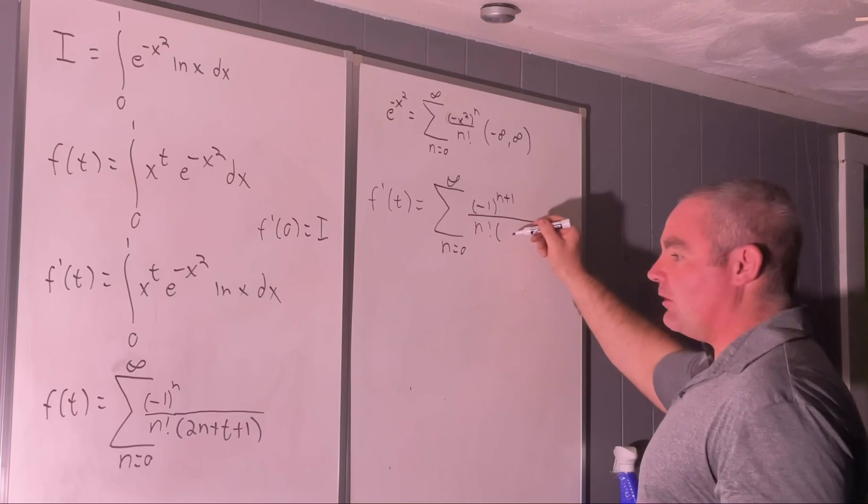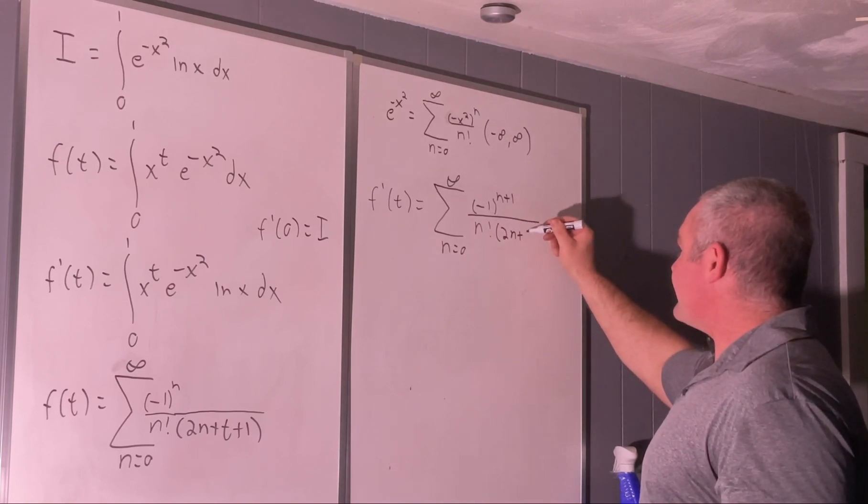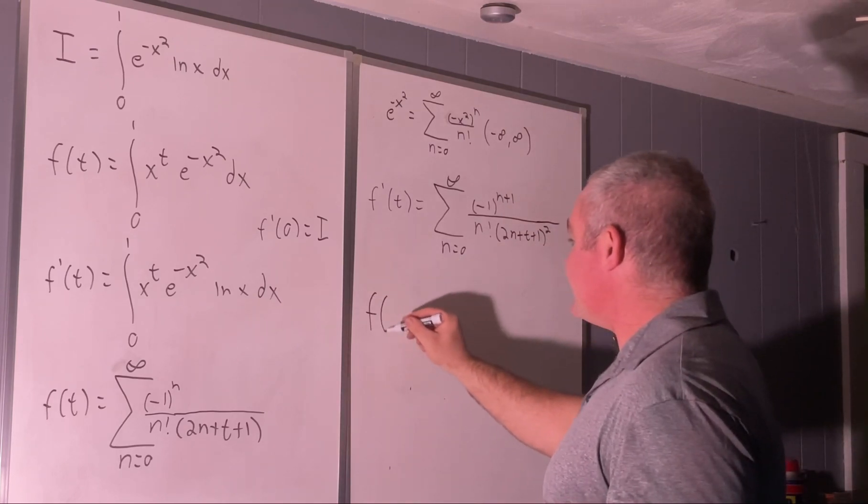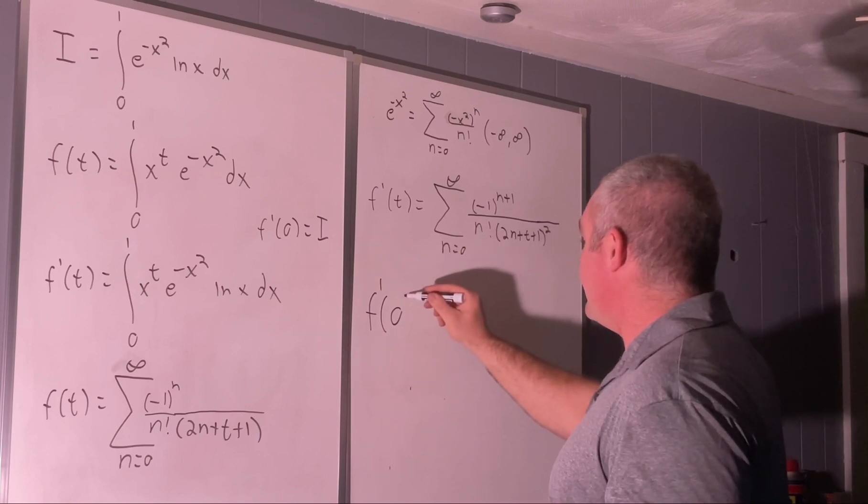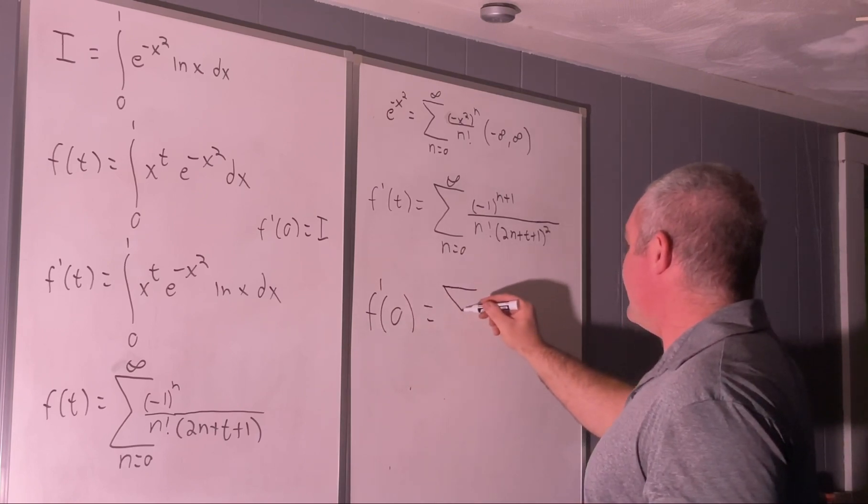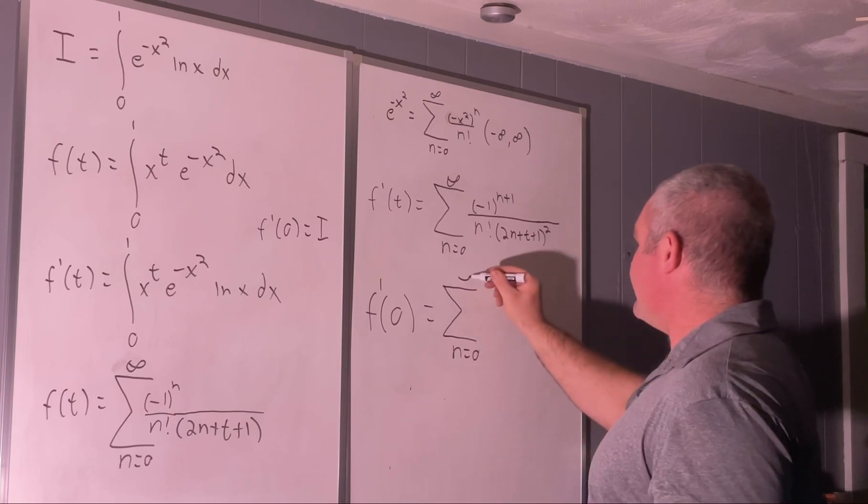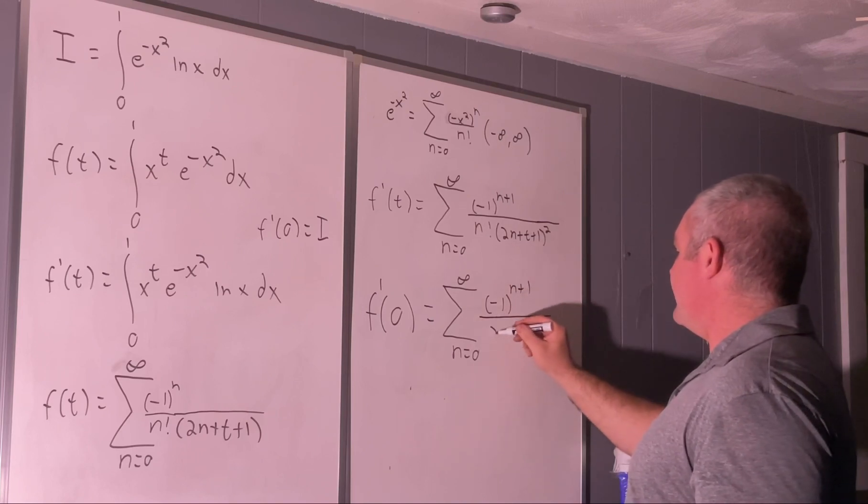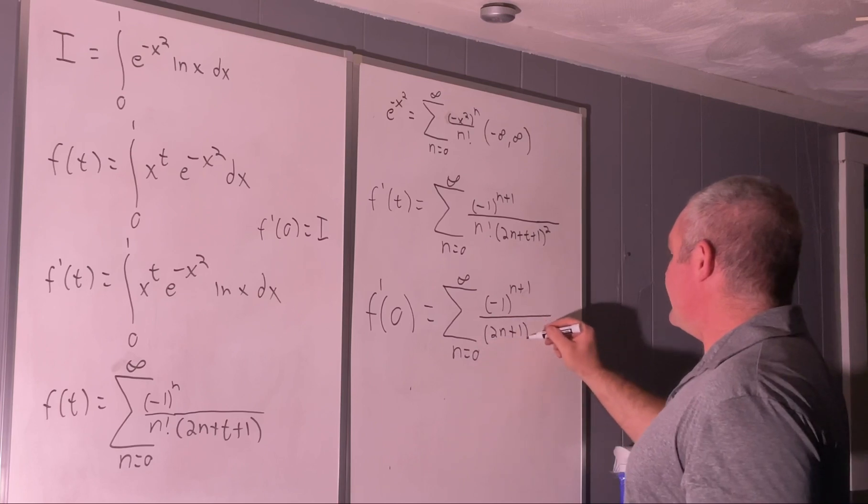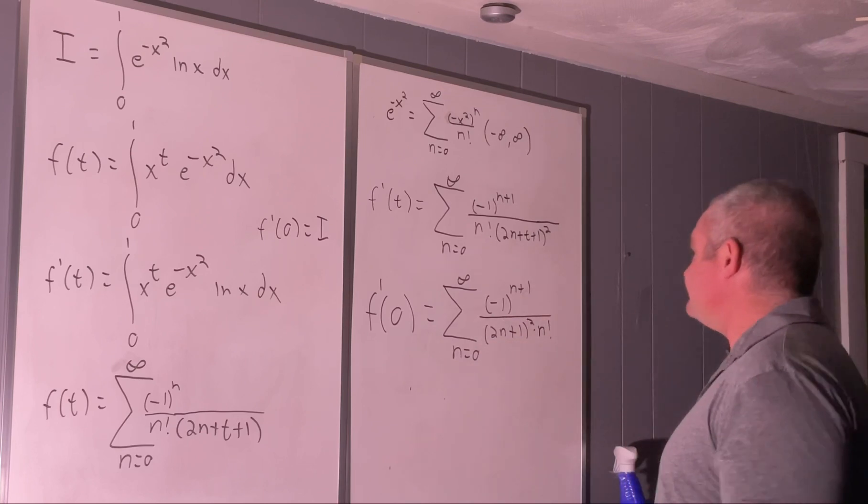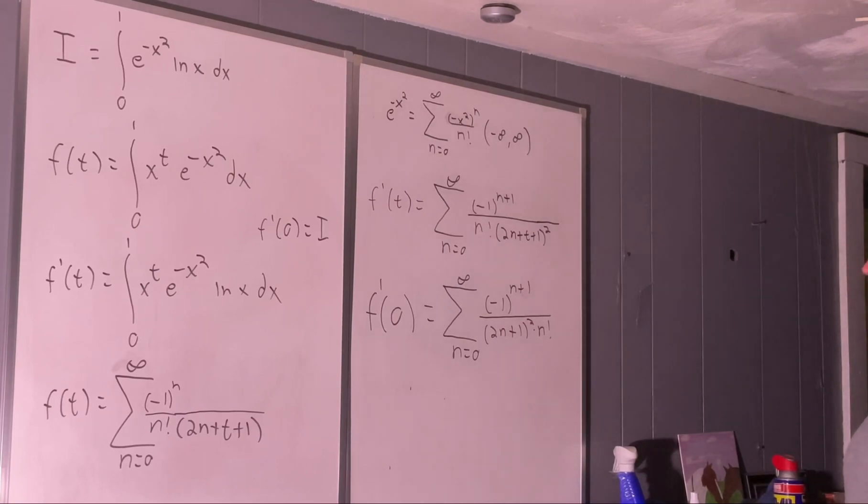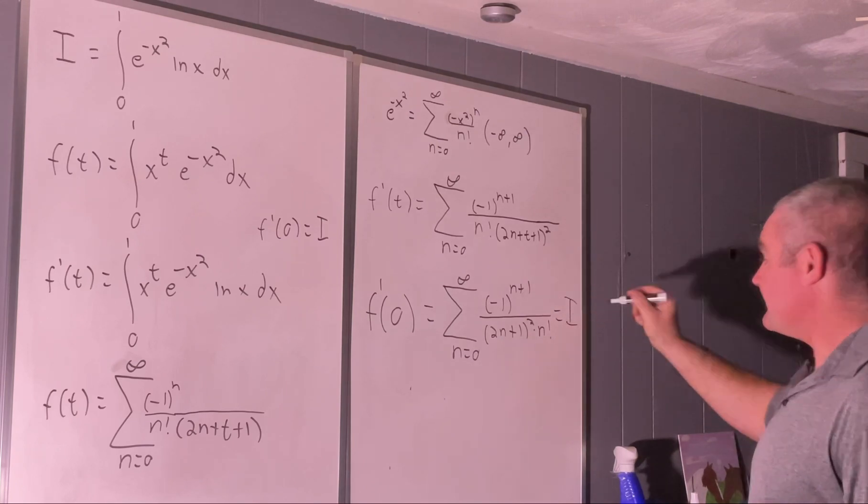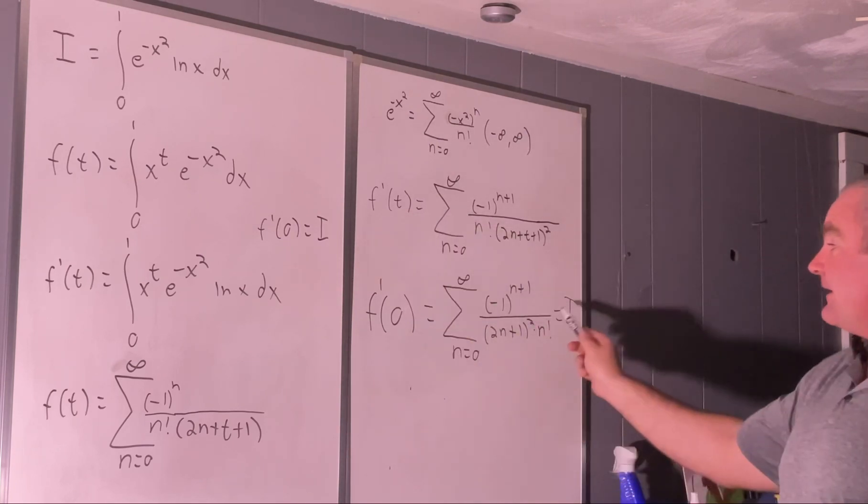So now we have n factorial over 2n plus t plus 1 all squared. And evaluating that at the point t is equal to 0 would give us the sum from n equals 0 to infinity of negative 1 to the n plus 1 over 2n plus 1 squared times n factorial. And that is the answer, and oh, I'm sorry, and that is equal to i. I forgot to show that, yeah, because f prime at 0 is i, and it's also this thing.